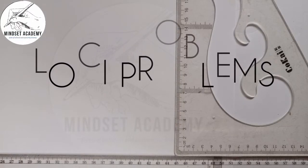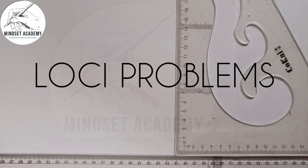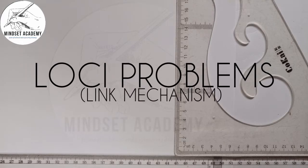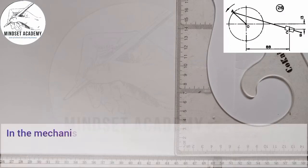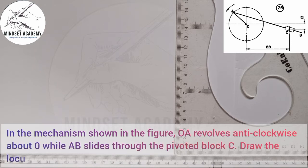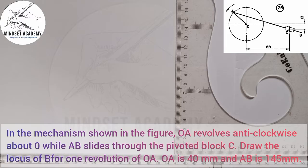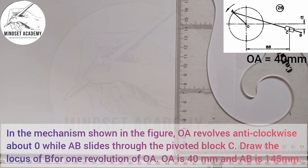Welcome to my channel Mindset Academy, where we want to solve a problem involving a link mechanism. The question says: in the mechanism shown in the figure, OA revolves anti-clockwise about O while AB slides through the pivoted block C. Draw the locus of B for one revolution of OA. OA is 40 millimeters and AB is 145 millimeters.